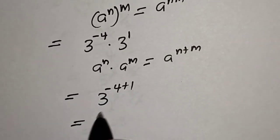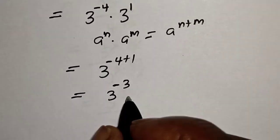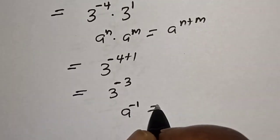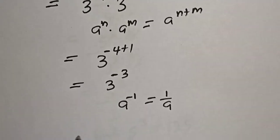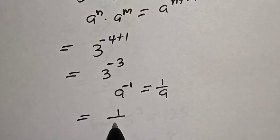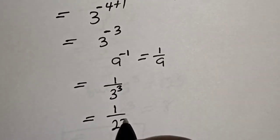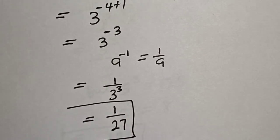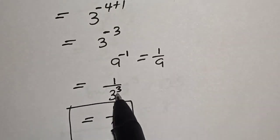This is equal to 3 raised to power minus 3. Also, if you have a raised to power minus 1, this is equal to 1 over a. Therefore this becomes 1 over 3 raised to power 3, which is equal to 1 over 27. That is our final answer. If you enjoyed the class, please don't forget to like, share, comment and subscribe.